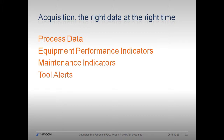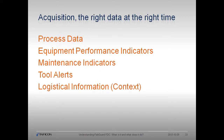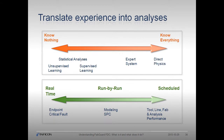FabGuard can also acquire and analyze alarms and events that happen on the equipment, and these alarms can be analyzed using a Pareto report. For wafer processing, FabGuard can collect any context or logistical information available, such as Lot ID, Slot ID, Substrate ID, Process Job, Recipe, etc. From a knowledge perspective, you can go from knowing nothing to knowing everything about a process.